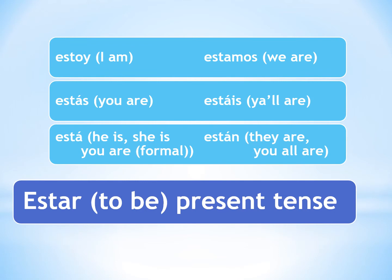Now let's look at how we conjugate estar, which also means 'to be' — here is the present tense conjugation chart. Estoy: I am. Estás: you are. Está: he is, she is, or you are in the formal version. Estamos: we are. Estáis: y'all are. Están: they are or you all are. Something important to notice is that the forms estás, estáis, and están all have an accent over the a, so make sure you include those accent marks.